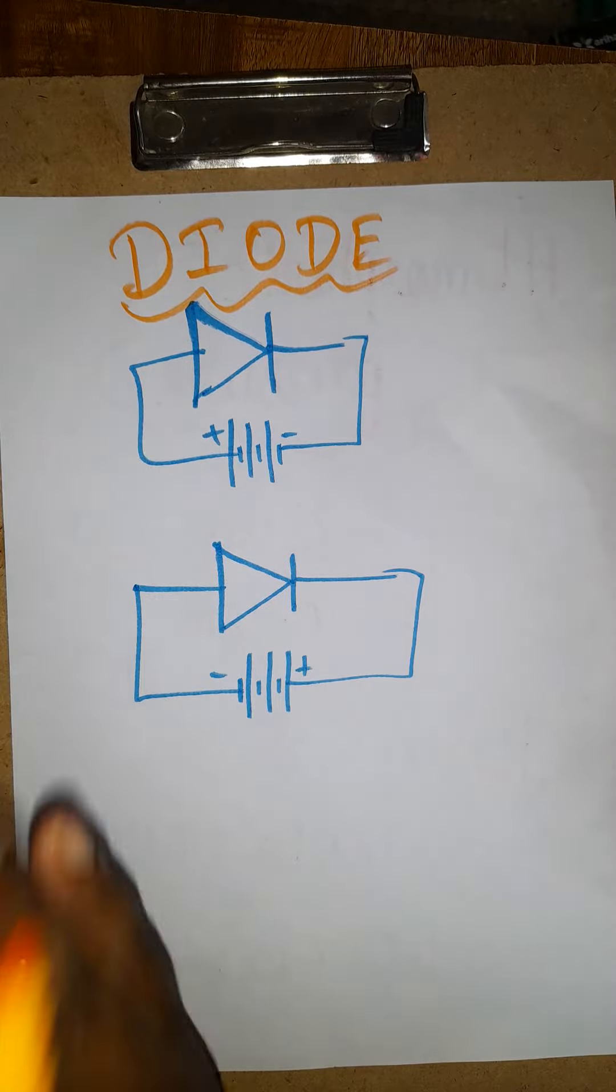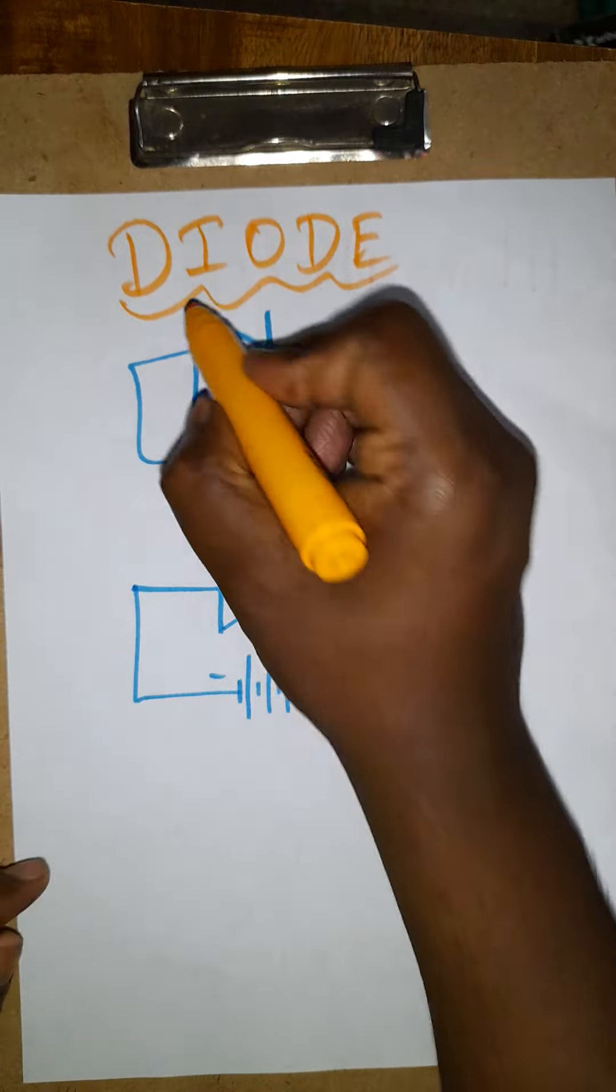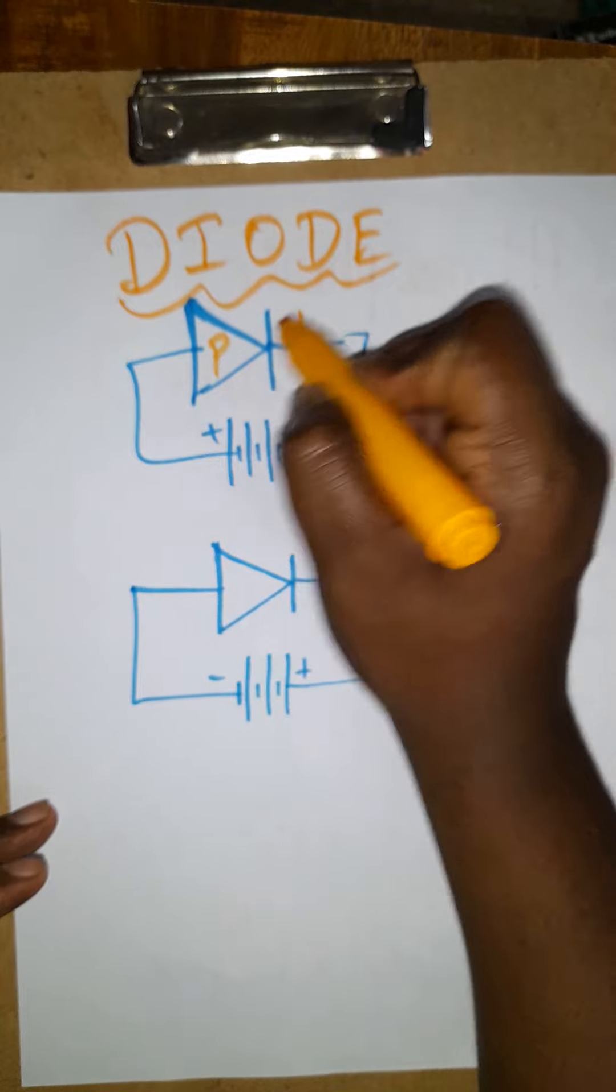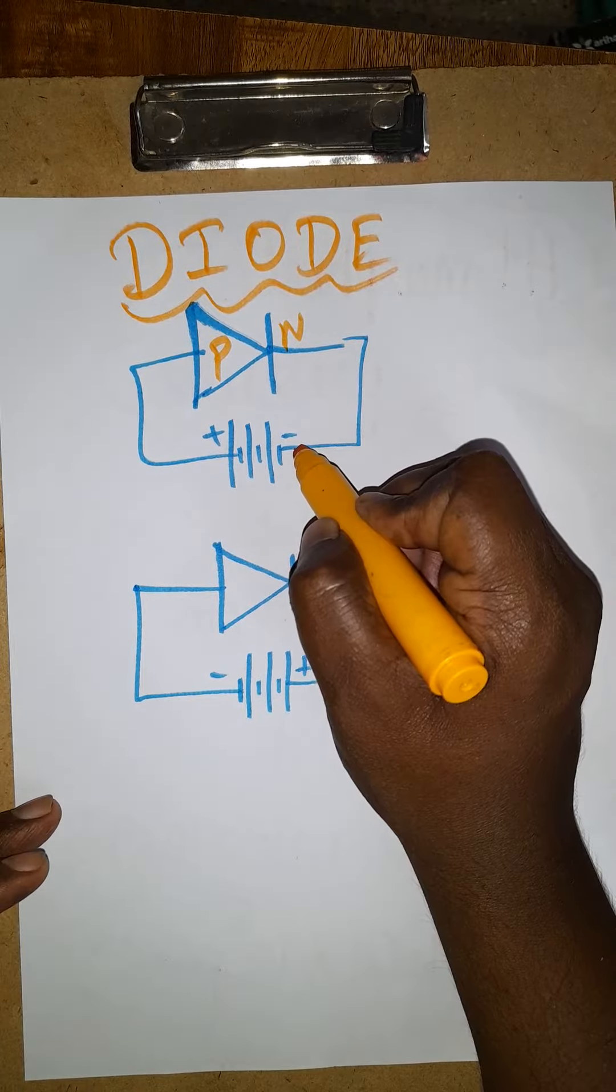Hello students, today we are going to learn about diode characterization. This is the symbol of the diode. This is P-type, this is N-type. When positive is connected to positive and negative is connected to negative, this is called forward bias.